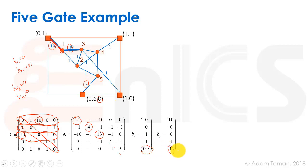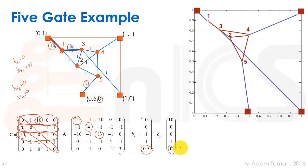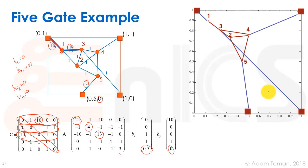Now all we have to do is solve this linear system, and we get our final placement. As we guessed, gate one and gate three are pulled tightly over to the pad in the corner, and the rest are scattered by being pulled toward the other pads, but pulled much less strongly because of the one versus ten weighting factor.